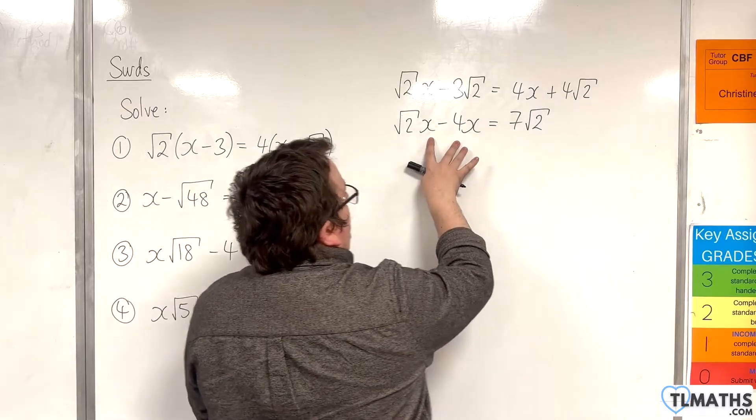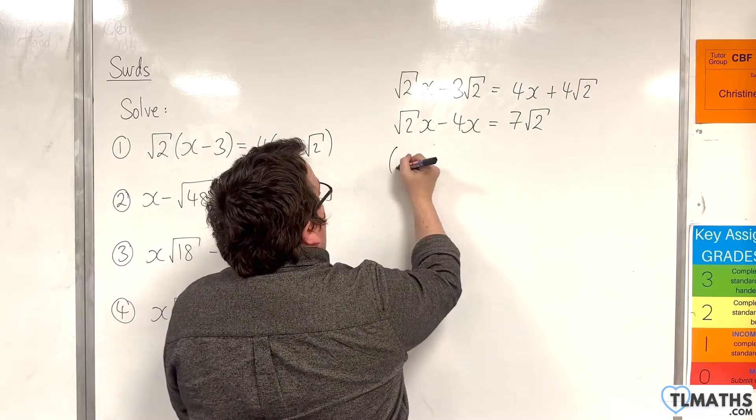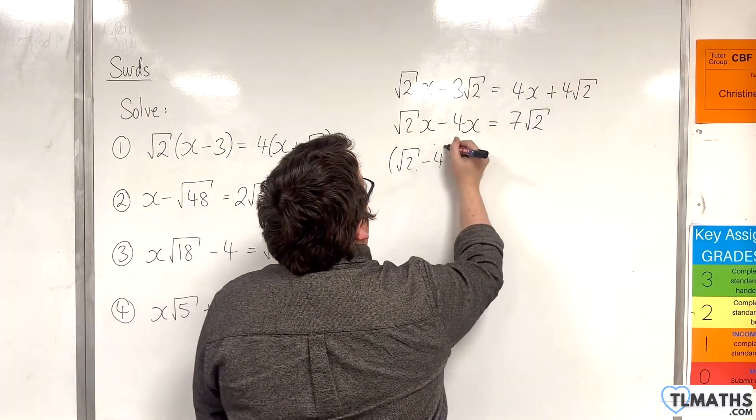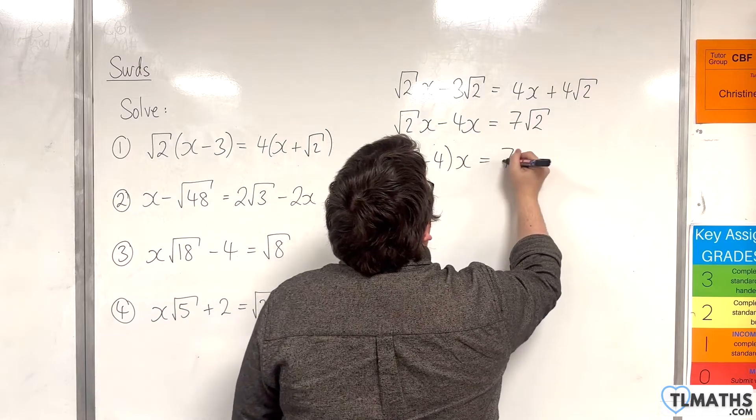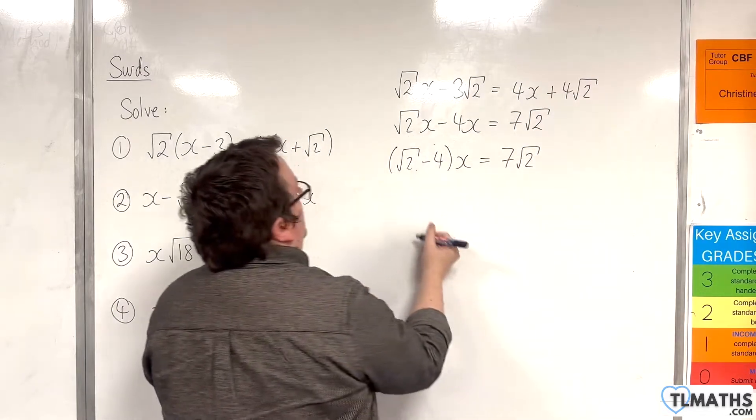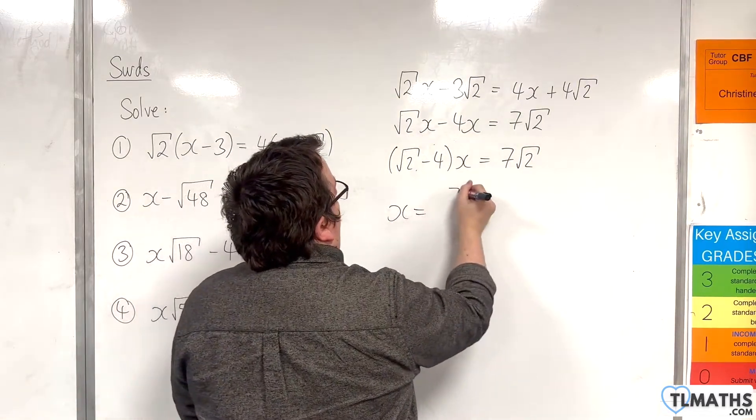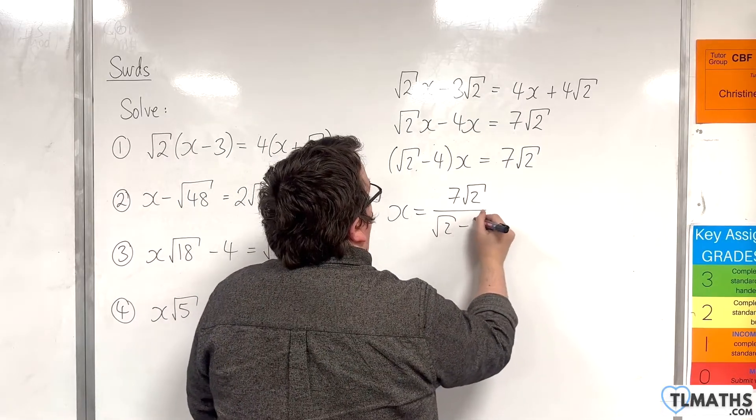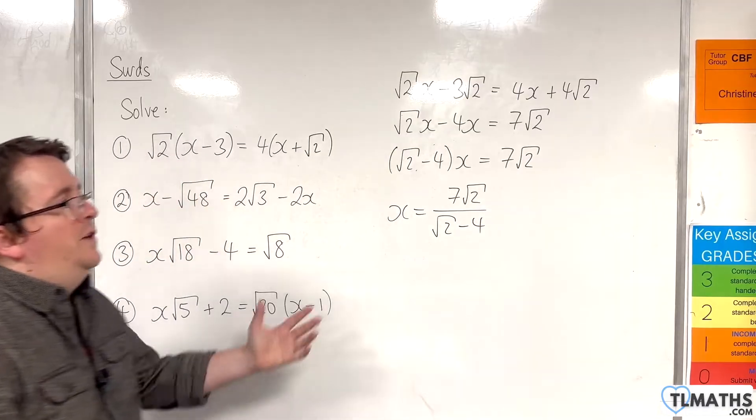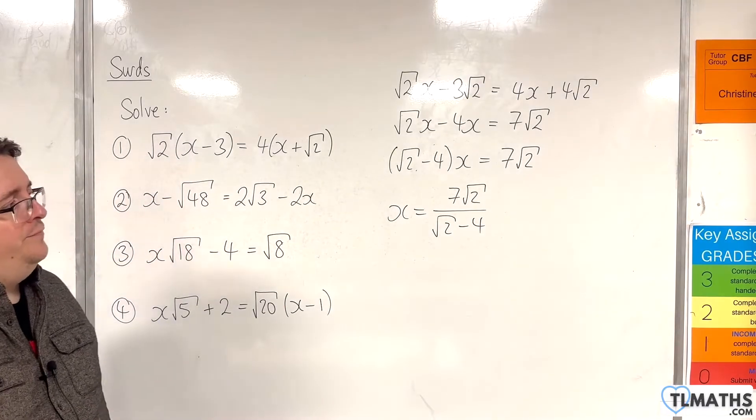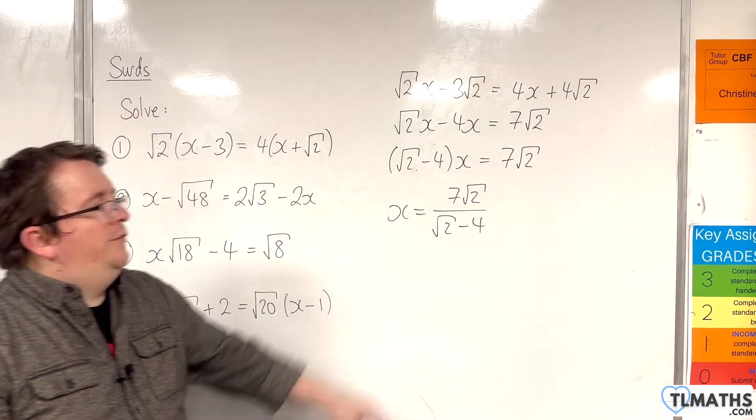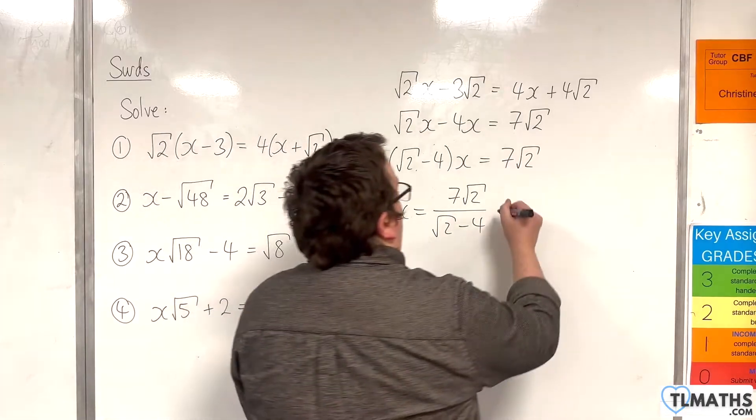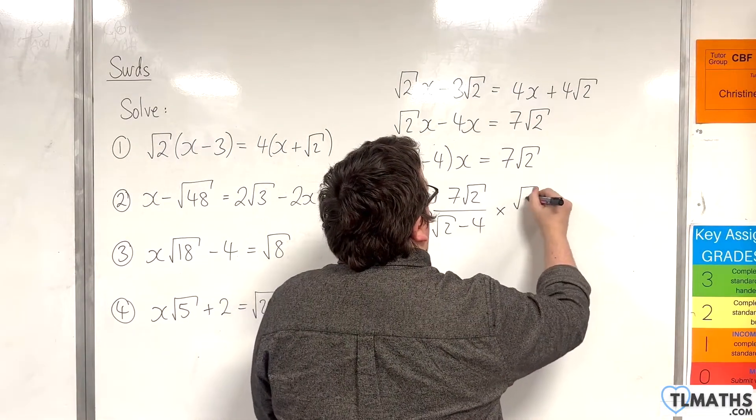Now on the left hand side I need to factor out the x. So I'll have root 2 take away 4 times x is equal to 7 root 2. And so x is 7 root 2 divided by root 2 take away 4. So dividing both sides by the bracket. Now I'm going to rationalize the denominator for this, multiplying top and bottom by root 2 plus 4.